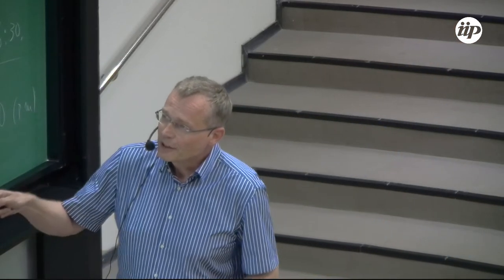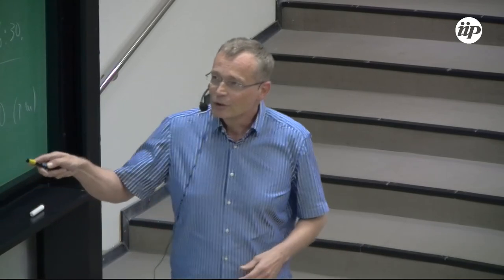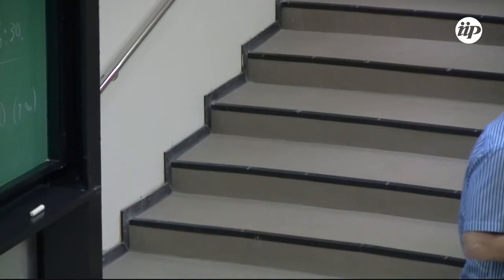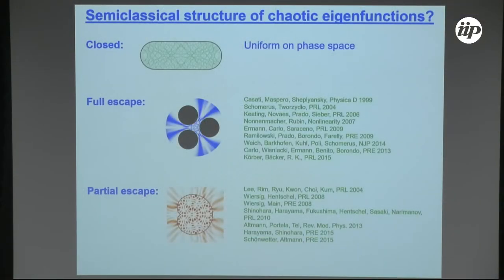Very nice work here — Giulio Casati, 20 years ago, Casati, Maspero, Shepelyansky — they showed that you have fractal properties of these eigenstates that are related to the classical dynamics, to the chaotic saddle, and things like that. And there are many people who have worked on this, and actually many are here in the audience who have worked on exactly this question.